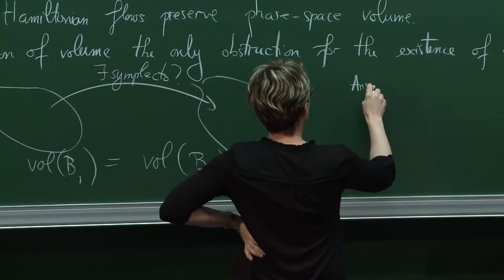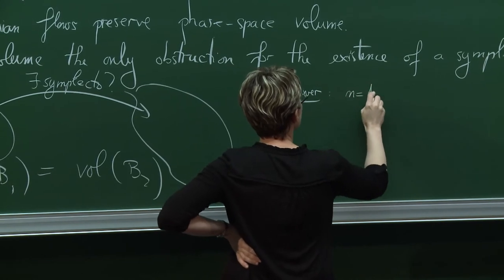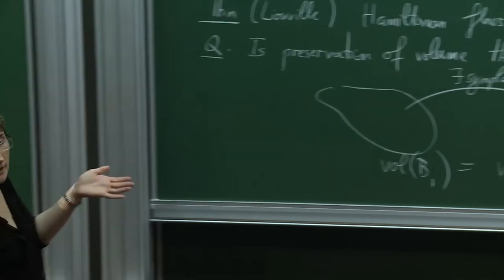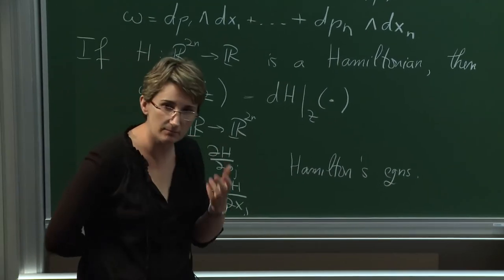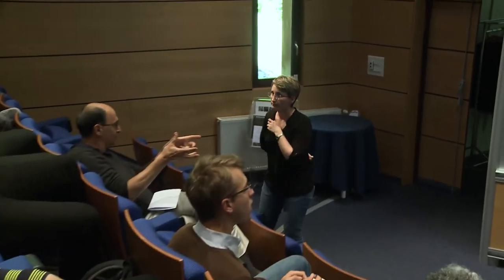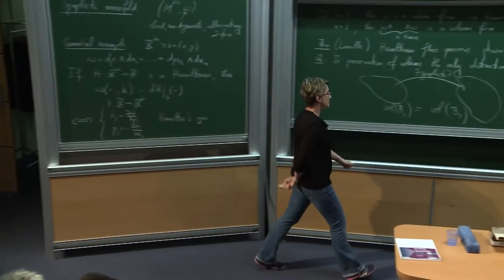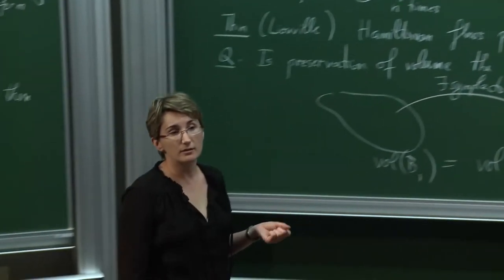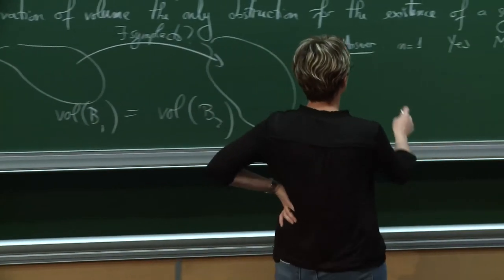If the complex dimension n equals 1 and I have two blobs of the same volume with a diffeomorphism between them, then Moser gives me a diffeomorphism preserving the volume — which is the symplectic form — so by definition that is a symplectomorphism. The answer is yes in dimension 1. However, if complex dimension is strictly bigger than 1, the answer is no, and this is Gromov's symplectic non-squeezing theorem.